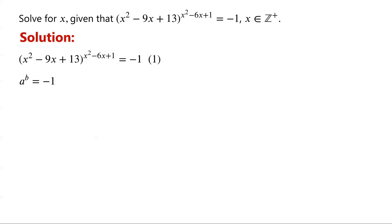For real numbers, the algebraic expression a to the power of b is well defined under certain conditions. If a is greater than 0, then a to the power of b is defined for all real numbers b, and a to the power of b is greater than 0.